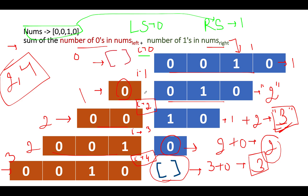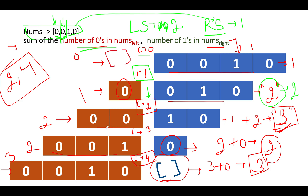At i equals 1, the current element is 0, so the left score increments to 1 — because the left score counts zeros in the left part. Right score remains 1. Total score is 2, matching our expectation. At i equals 2, the current element is again 0, so left score updates to 2. Right score remains 1. Total score is 2 plus 1, which is 3 — matching our expectation.